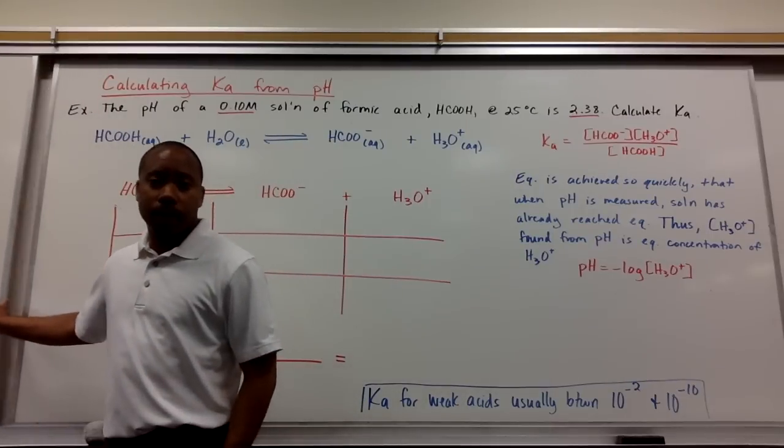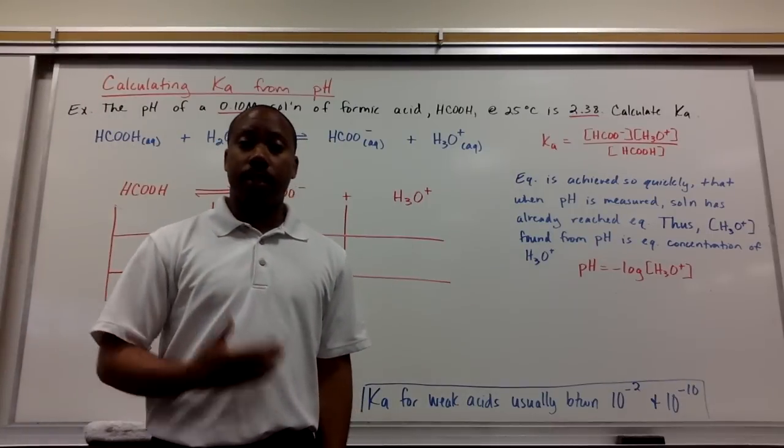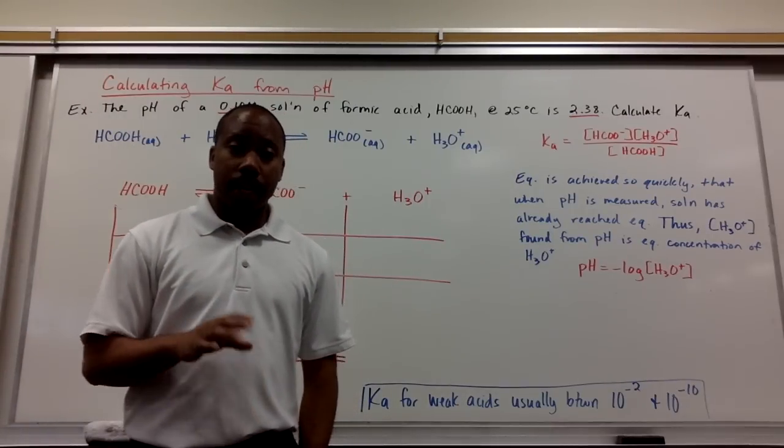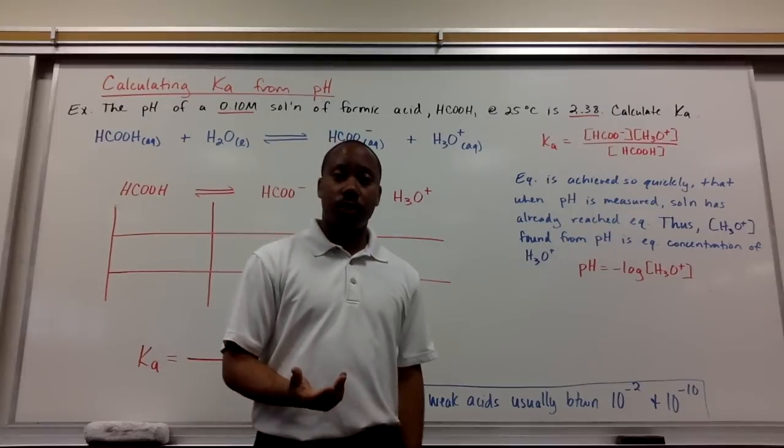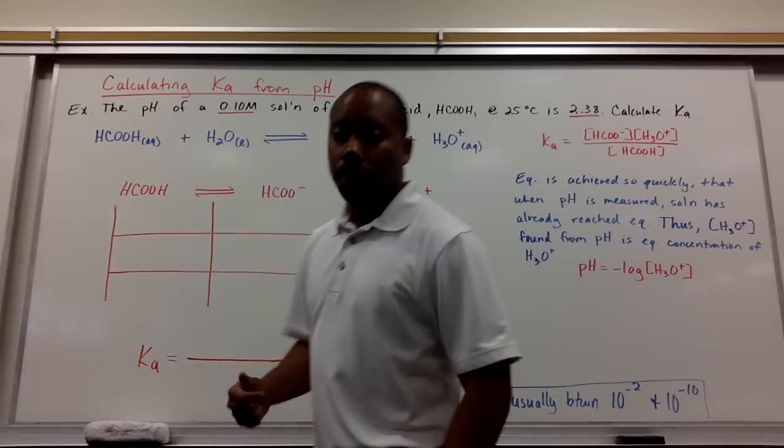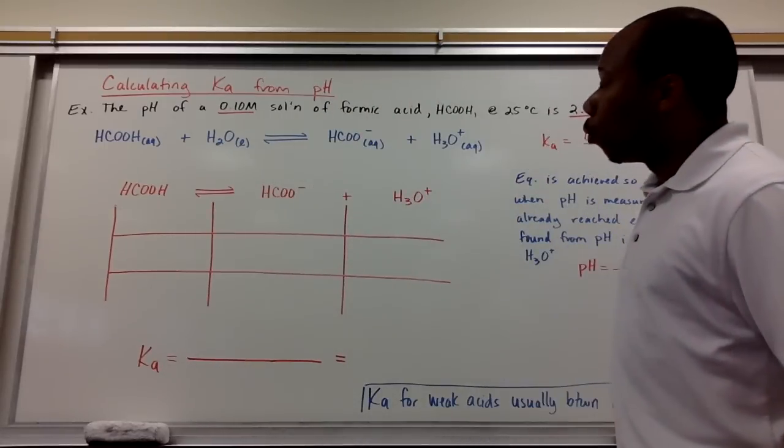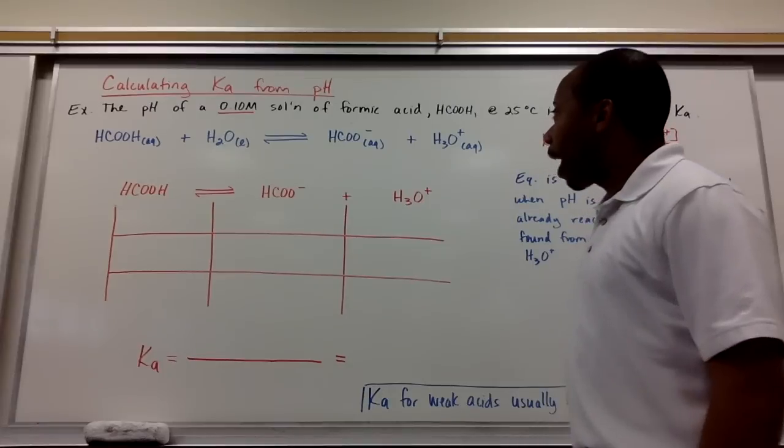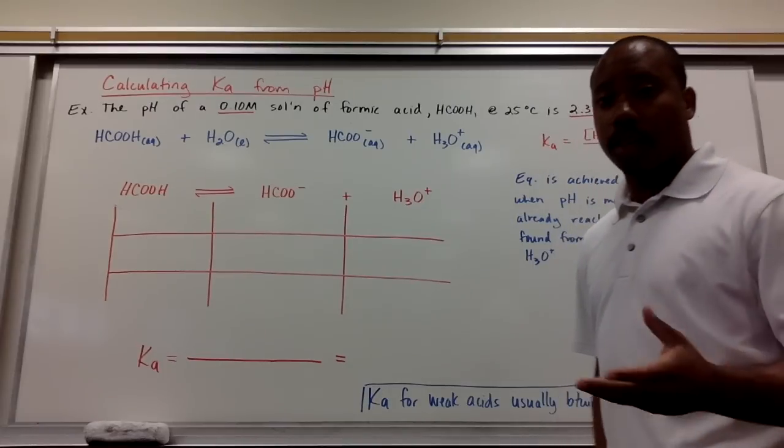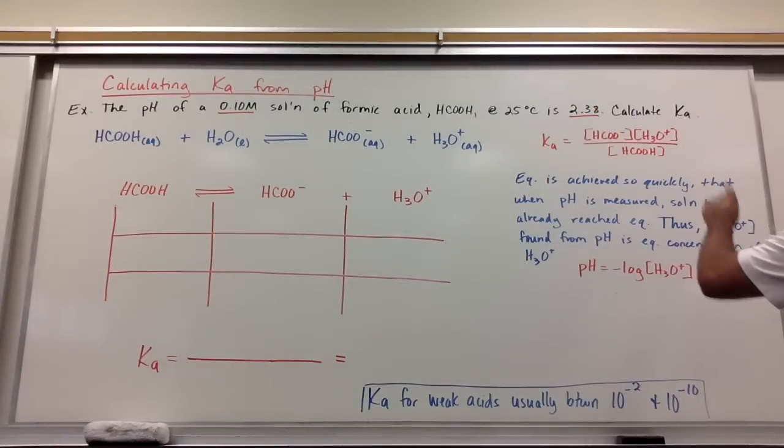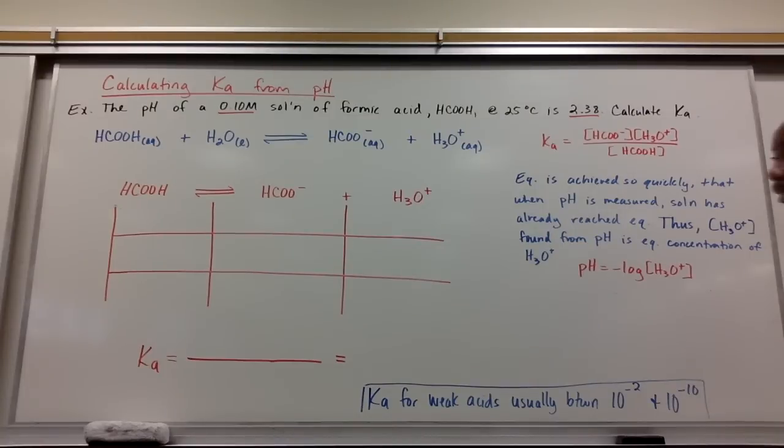Now, this K sub A constant is called your acid dissociation constant. It measures the extent to which an acid will dissociate in water. The greater the value of K sub A, the stronger the acid. Now, we can use different criteria to calculate K sub A. We're going to learn how to do that now from pH. So an example problem. The pH of a 0.10 molar solution of formic acid at 25 degrees Celsius is 2.38. Calculate the K sub A.